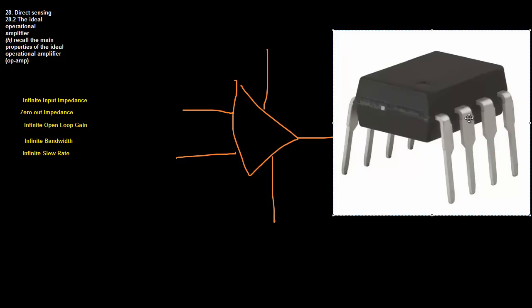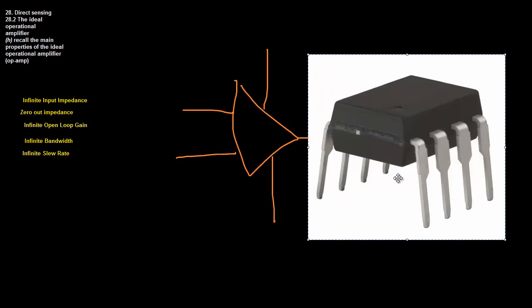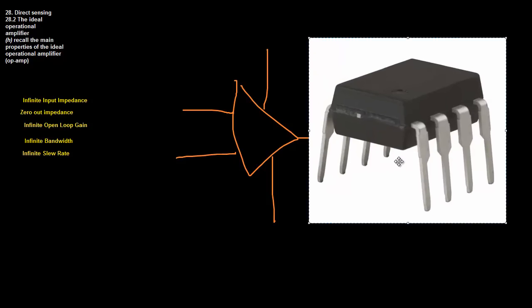These op-amps are pre-built and you can just slot them into devices. They're very popular these days in many electronic devices because they're able to perform mathematical operations such as addition, subtraction, and many other operations depending on the design. We're just going to look at the basic op-amp now, which is able to add and subtract. I'll explain the applications in the next video; in this one I'll just explain how it works.